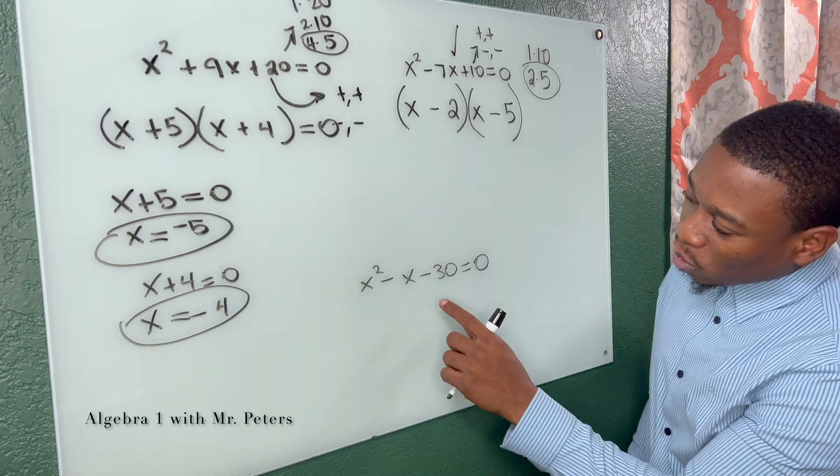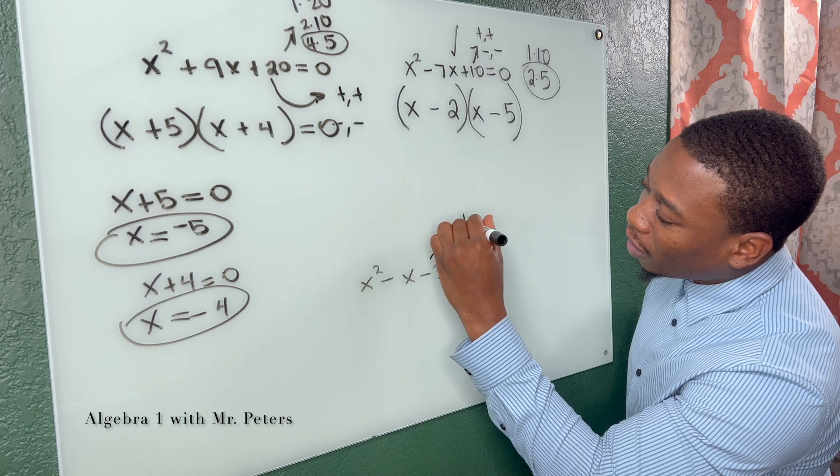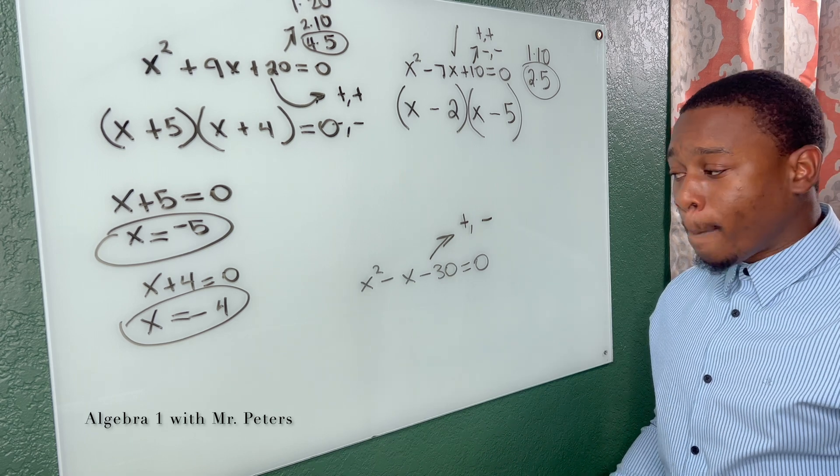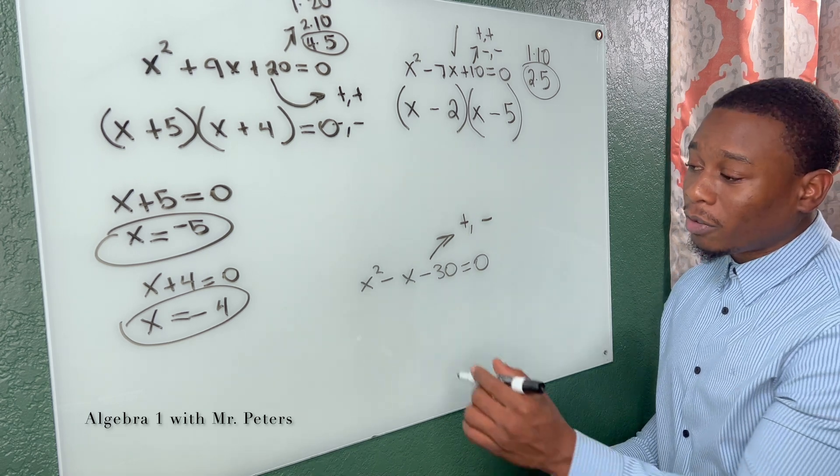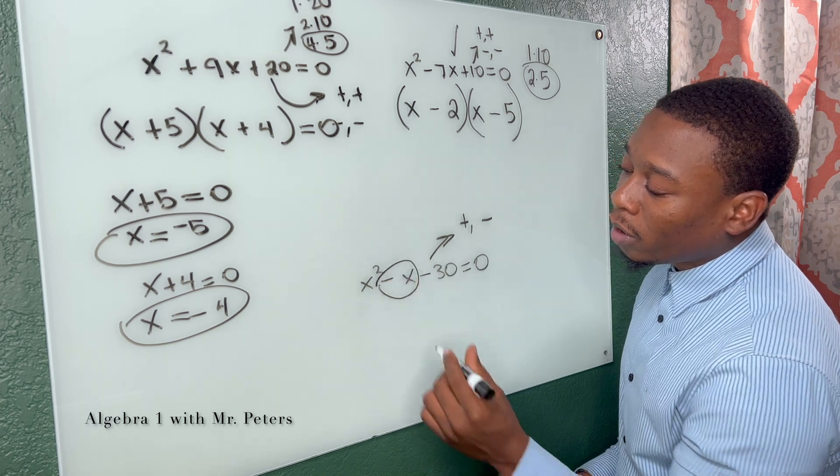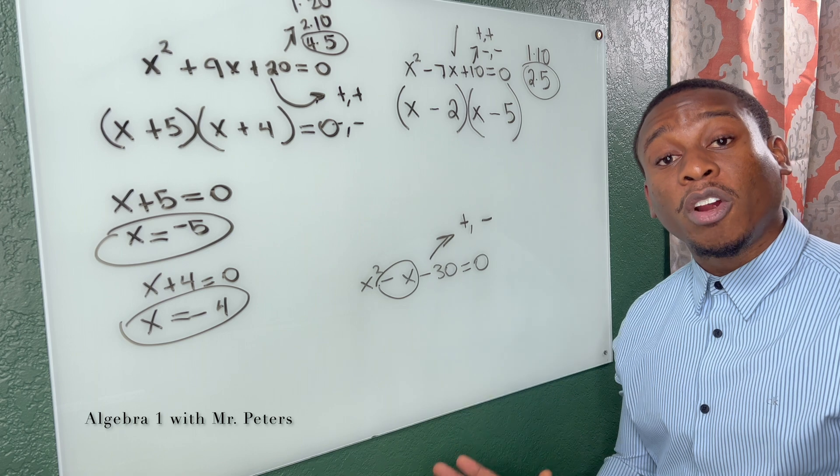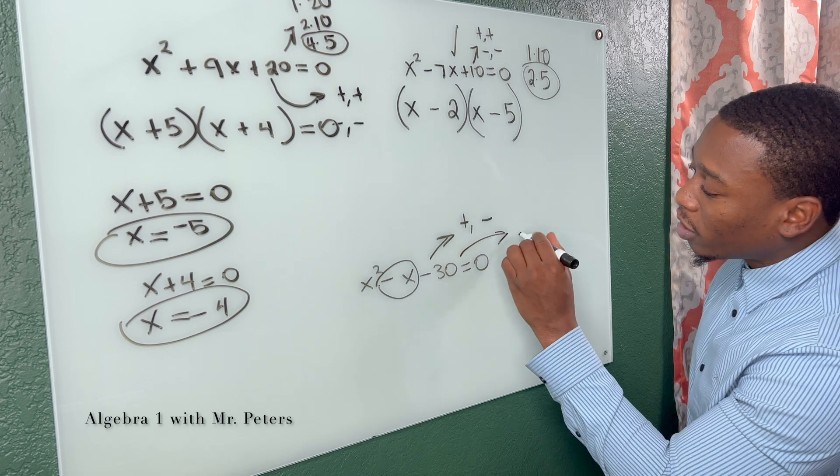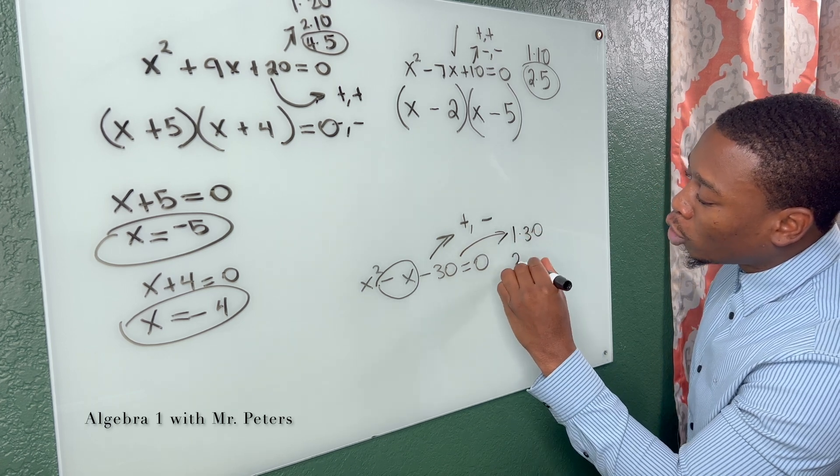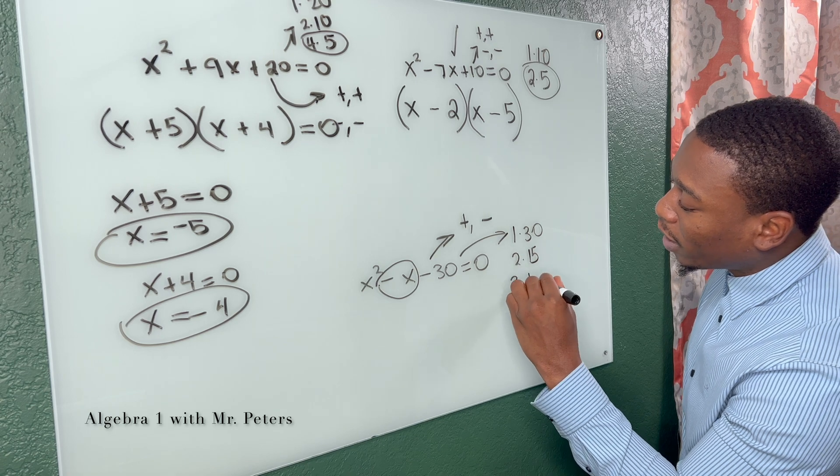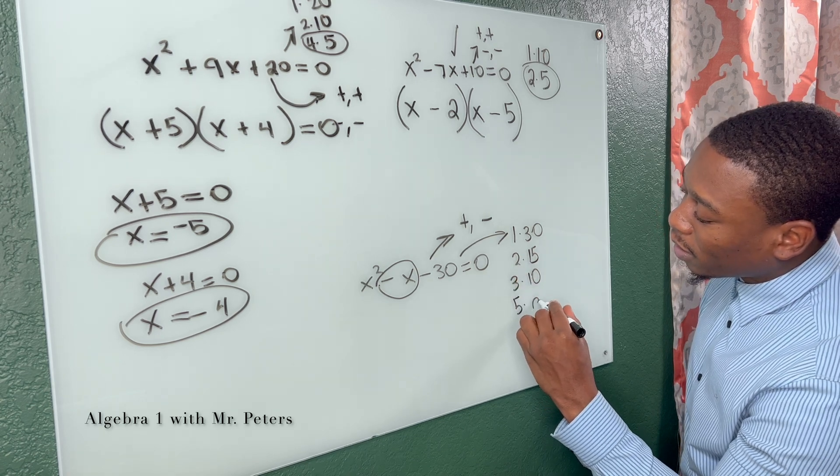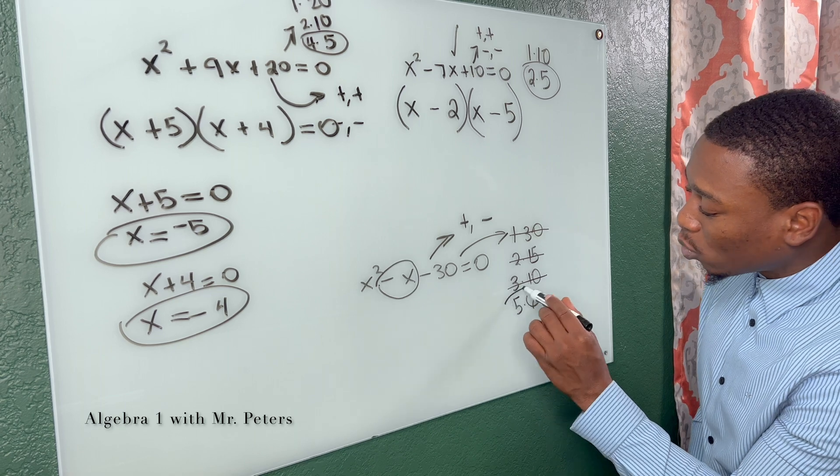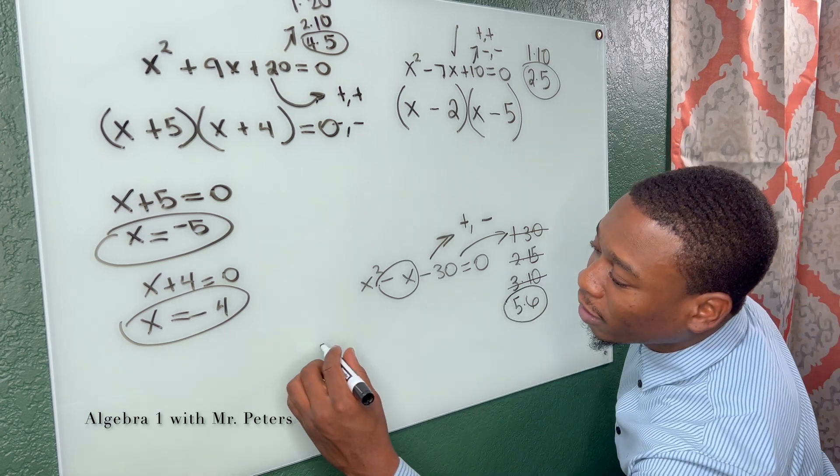Now the other situation is when C is negative. So when C is negative, that lets you know that your signs are opposite, one positive, one negative. And to know which one is positive or negative, you look at the middle term. The larger number is going to take the sign of the middle term. So once we draw this out, our factors: one times 30, two times 15, three times 10, and five times six. None of these combinations are going to get us one when we add or subtract except for this last one, five and six.